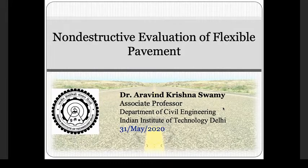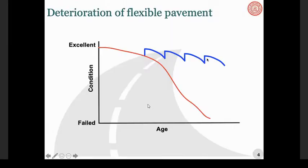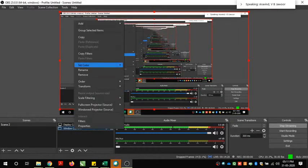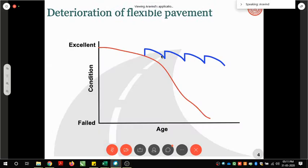If you follow the 'do nothing' strategy — just leaving the pavement to fail and then building new — indicated by the red curve, you need to invest a lot more money compared to intervening at regular intervals with maintenance activity to keep the pavement at reasonable riding quality. So the key question is: at what point do I need to intervene? That is the whole purpose of structural health monitoring of pavement using non-destructive evaluation.